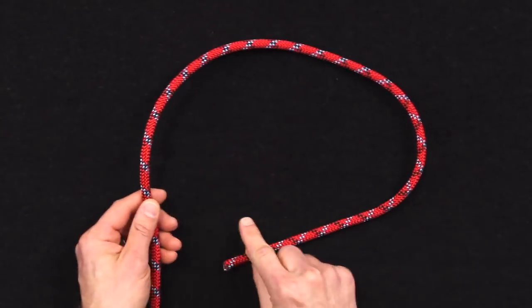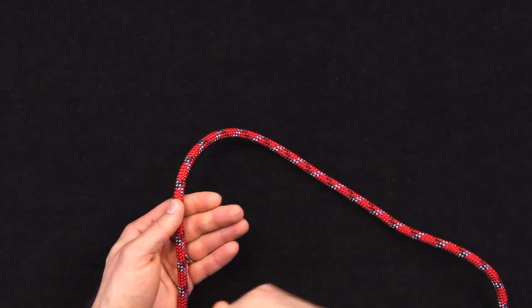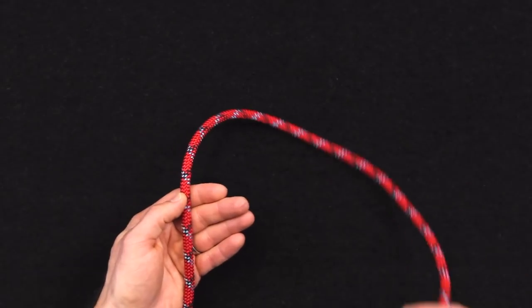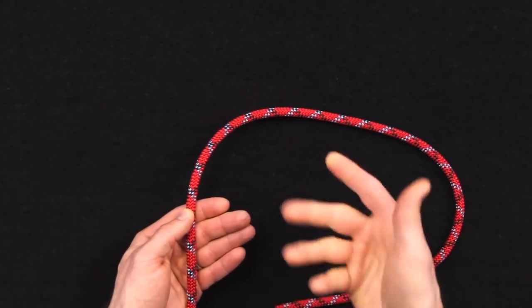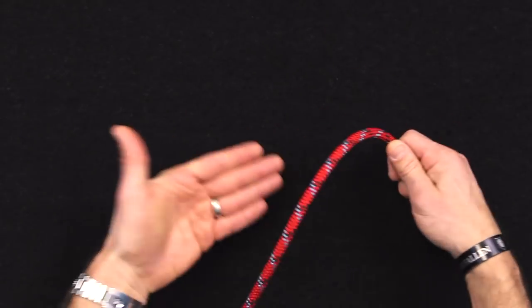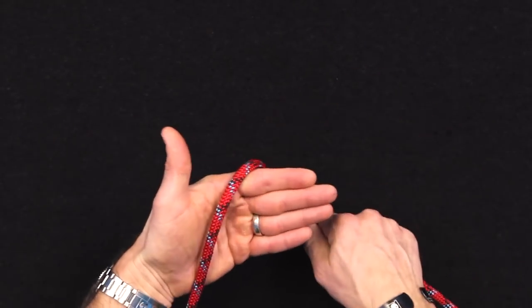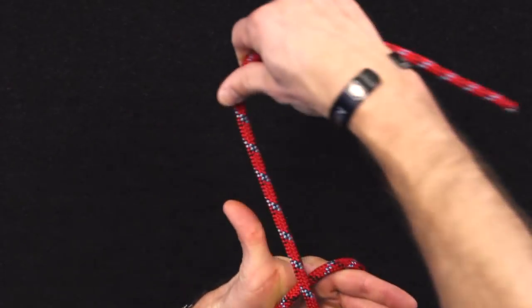You want to find the working end first, and from the working end, there's two ways of tying this. There's a way of tying it in the middle of the rope which we'll go over and then at the end of the rope. So even though we're calling this the working end, it's simulating the end of a rope. You're going to tie around the object. I'm using my hand as the post for this. I think it'll provide a better visual. So you're going to come around, across.